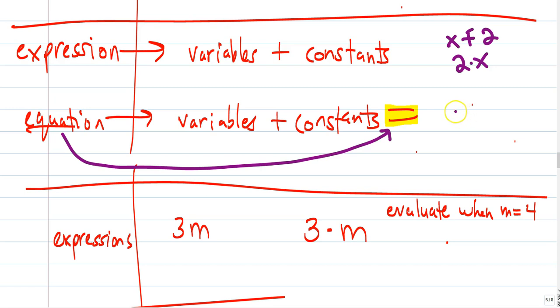When we have an expression, we're just expressing some mathematical group. When we have an equation, we are equating it. We are making it equal to something. So, instead of just X plus 2, it would be like X plus 2 equals something.